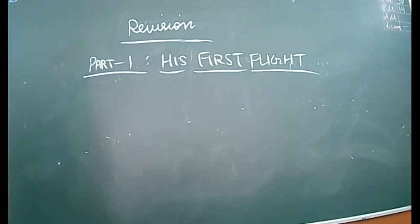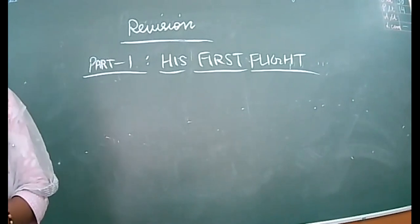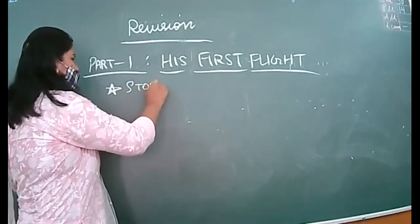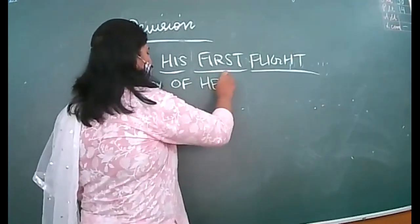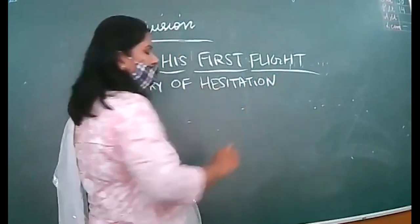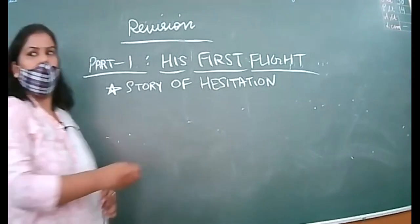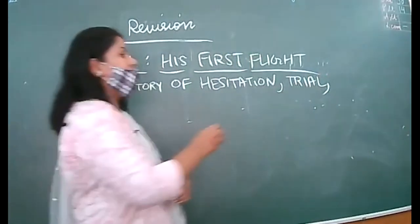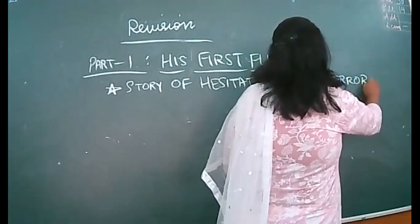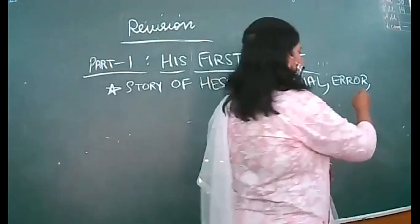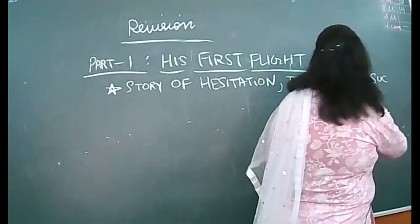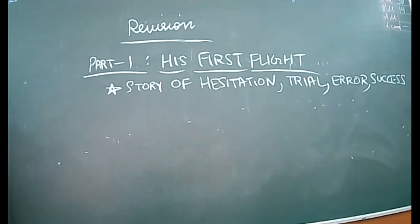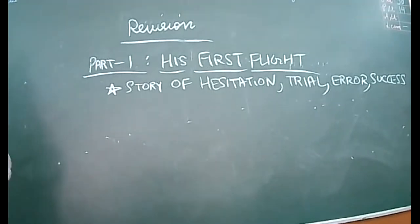It is a story of hesitation, trial, error, and being succeeded. The first value point is that it is a story of hesitation — firstly we hesitate to do something, then trial — we give it a try, then we commit mistakes and errors, and finally we get success. The theme of the story is: this is the story of hesitation, trial, error, and success.